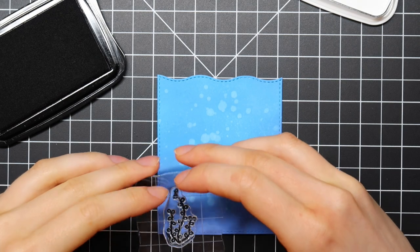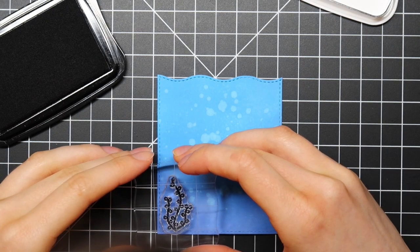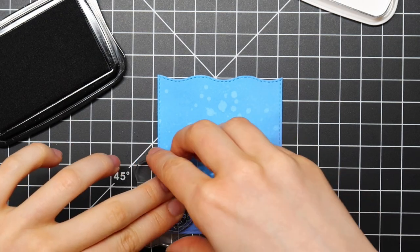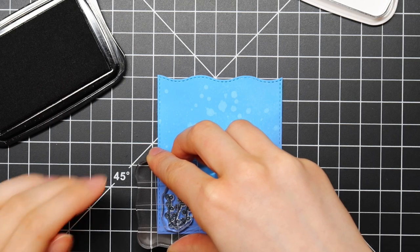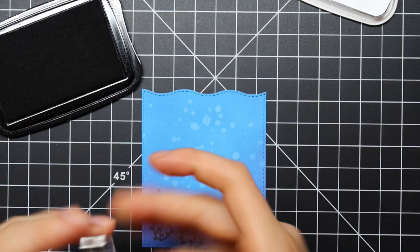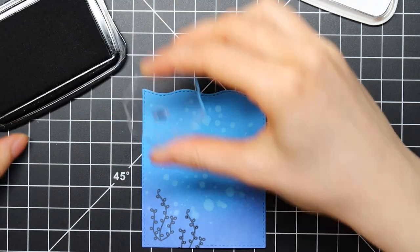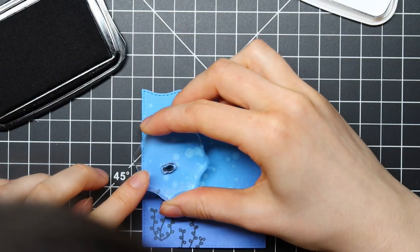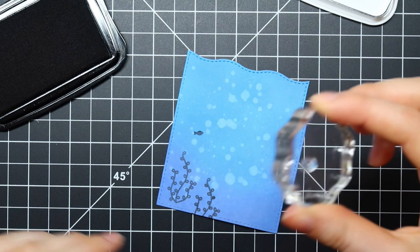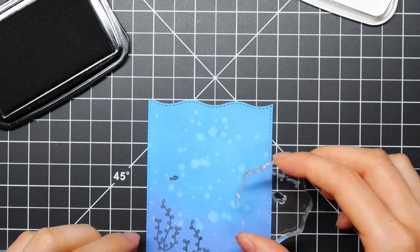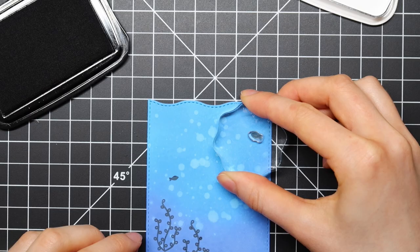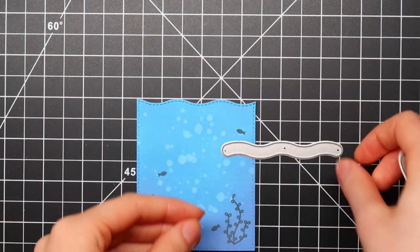I'm going to be stamping some of this seaweed on the bottom of my ocean piece using Memento Tuxedo Black ink. Of course I made sure that this piece was completely dry since I used some water. I'm also stamping this adorable teeny tiny little fish just to add some extra interest to this background and to add some contrast.